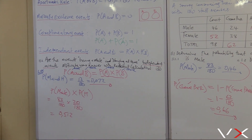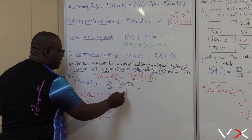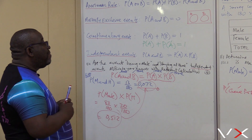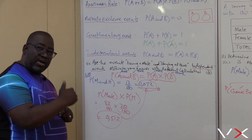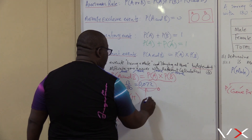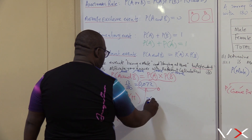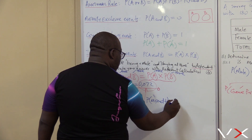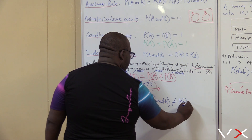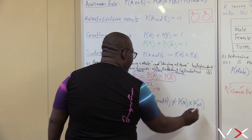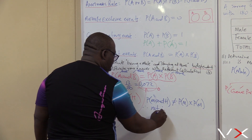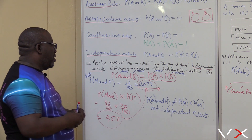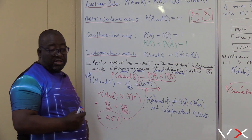Now let me compare the two results. Is 0.072 the same as 0.051? No, they are not the same. Therefore, the events of being male and staying at home are not independent events. Don't forget to write the conclusion. Since P(male and home) is not equal to P(male) times P(home), therefore they are not independent events. That's how you test for independence — you compare these two values. If they give the same thing, the events are independent; if not, they are not independent events.